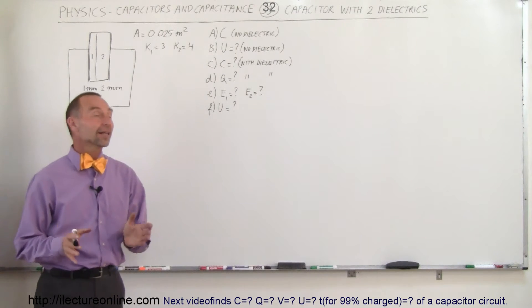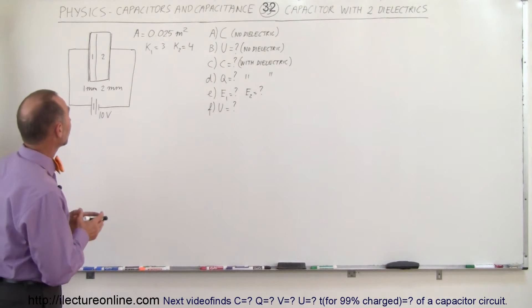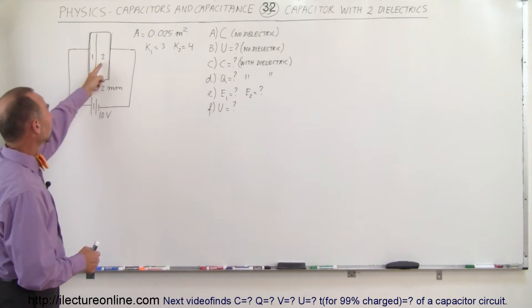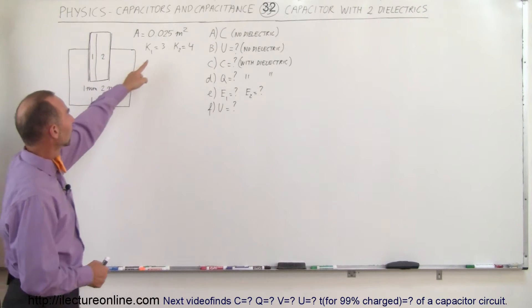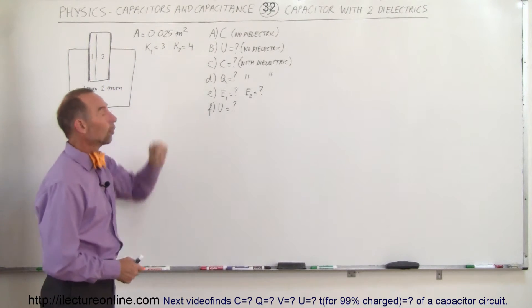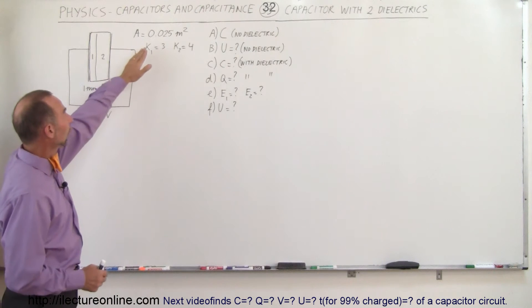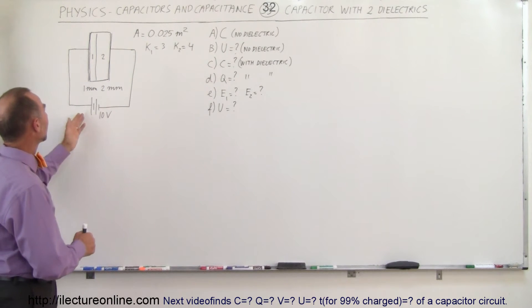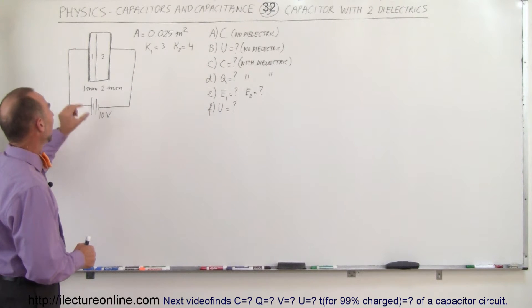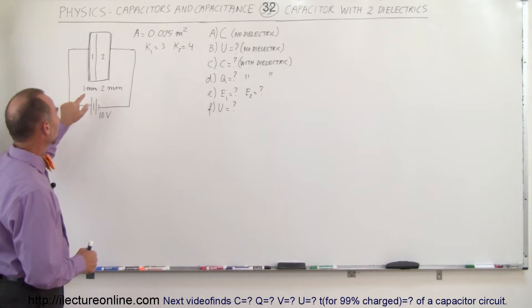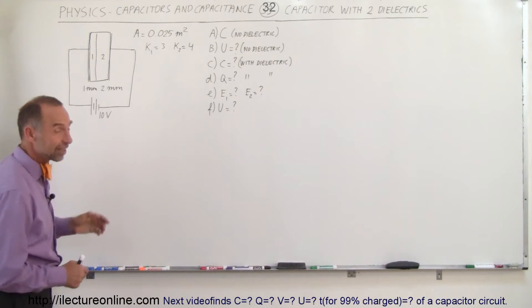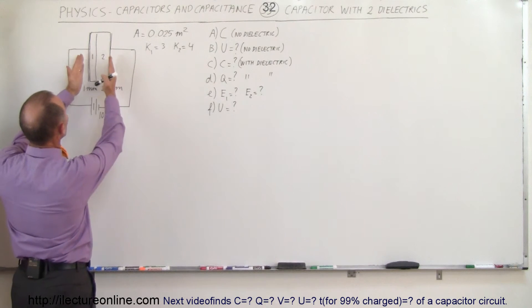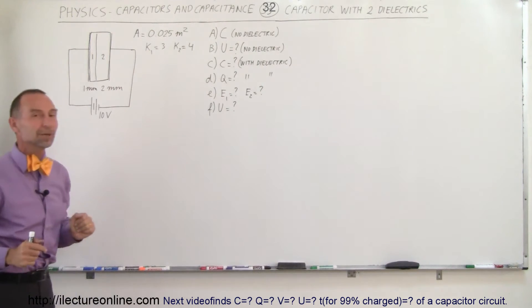Welcome to Electron Online. We have a capacitor with two dielectrics side-by-side: dielectric 1 and dielectric 2 with constants 3 and 4. The area of the plate is 0.025 square meters, a 10-volt battery is attached, the thickness of the first dielectric is one millimeter, and the thickness of the second dielectric is two millimeters, which means the distance between the plates is three millimeters.